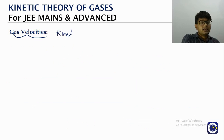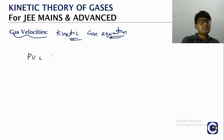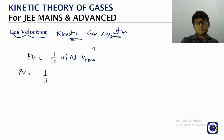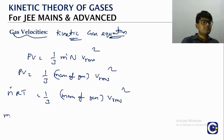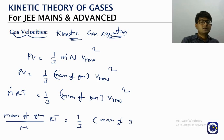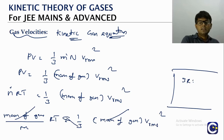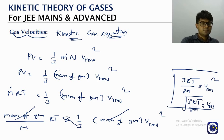Derivation of v_rms from the kinetic gas equation: PV = (1/3)mN·v_rms². Since mN = total mass of gas, and PV = nRT = (mass/M)RT, we get: 3RT/M = v_rms², so v_rms = √(3RT/M). This confirms the expression we saw.